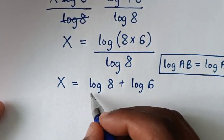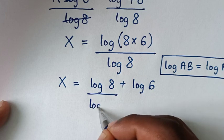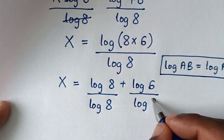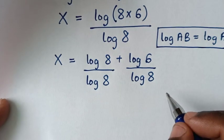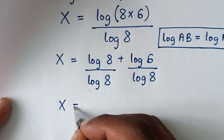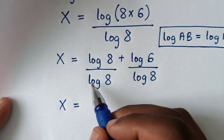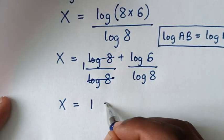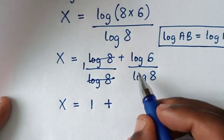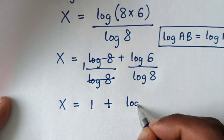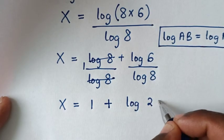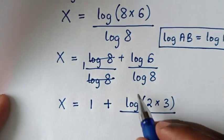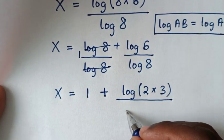So we split the fraction: over log of 8 and over log of 8. It will be x is equal to log of 8 divided by log of 8, which equals 1, plus log of 6 over log of 8.